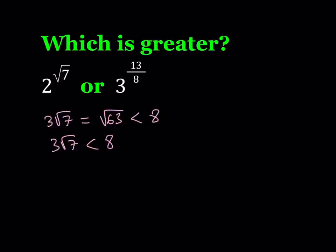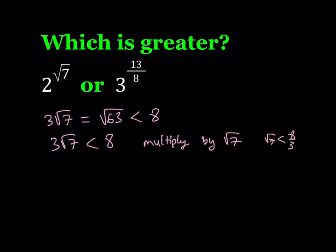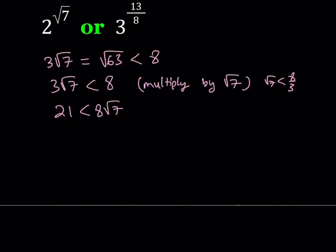Now we're going to multiply both sides by root 7. By doing this we'll be able to compare root 7 to a rational number. You could divide both sides by 8 to get root 7 is less than 8 thirds, but we actually need root 7 to be greater than some rational number. Multiplying both sides by root 7 gives us 21 is less than 8 root 7, which means root 7 is greater than 21 eighths.